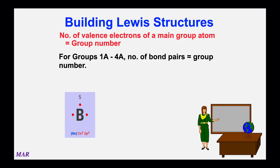Boron is in group 3A, and boron will usually have three bonding pairs. Carbon is in group 4A and will usually have four bonding pairs around it. It's more likely that carbon will have four bonding pairs all the time than boron will have three bonding pairs all the time. For groups 1A through 4A, that's a relatively good rule of thumb.